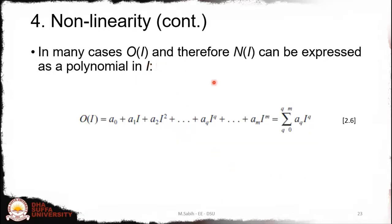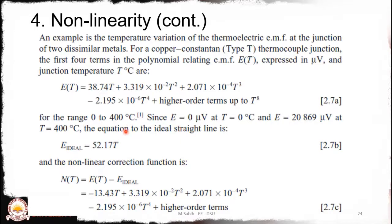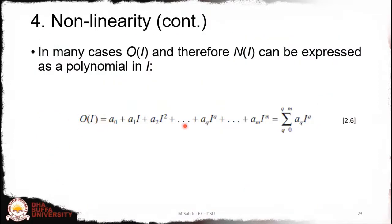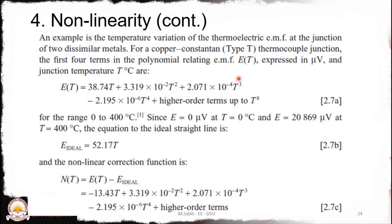In many cases the output-input relationship can be represented by a polynomial function. As an example, consider the temperature variation of the thermoelectric EMF at the junction of two dissimilar metals — a Type T thermocouple. The polynomial equation relating the EMF output to temperature is: 38.74T plus 3.19×10⁻² T² plus higher-order terms in T³. This is a nonlinear model where the output is expressed as a polynomial of the input.